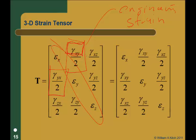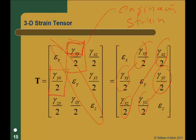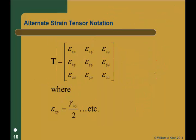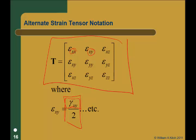Just like the stress tensor, this is a symmetric matrix, because the shear strains on the opposite sides of the element have to be the same. So we really only have six components, not nine. You will occasionally see this notation where everything has a double subscript — when the two subscripts are the same, that's a normal stress; when the two subscripts are different, it's a shear stress. That value really is the engineering strain divided by two. Don't get freaked out, it's just a different labeling system.